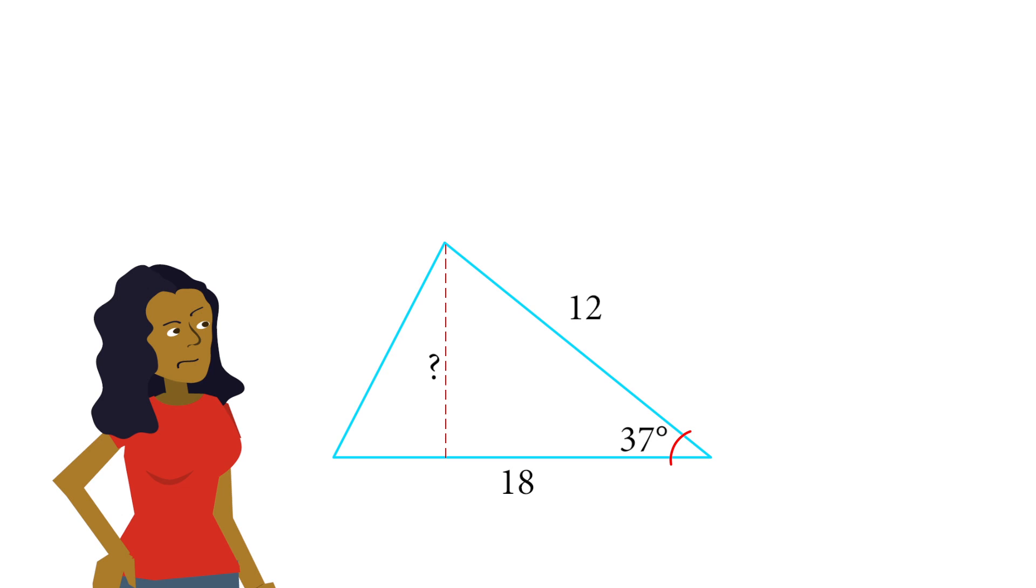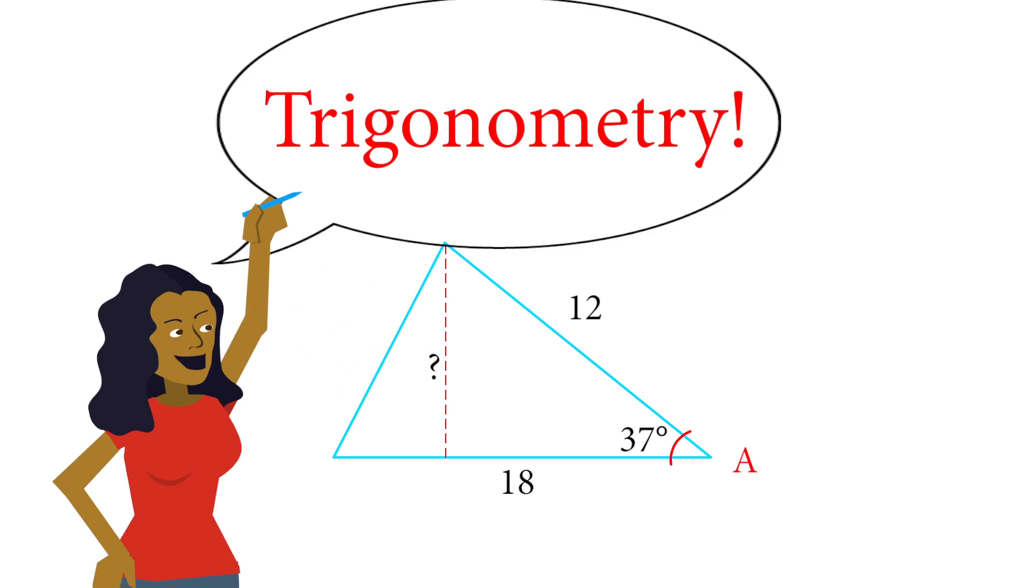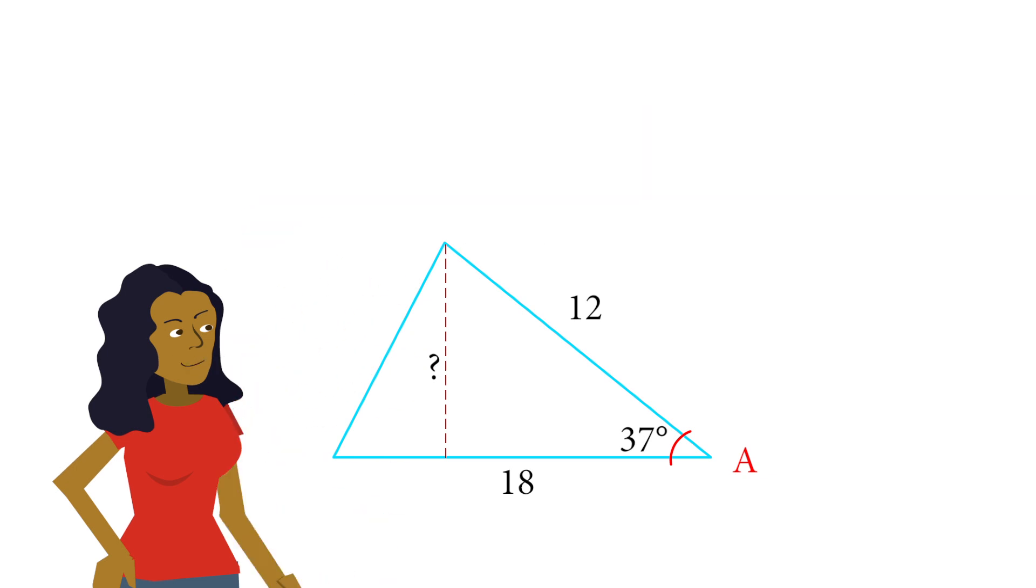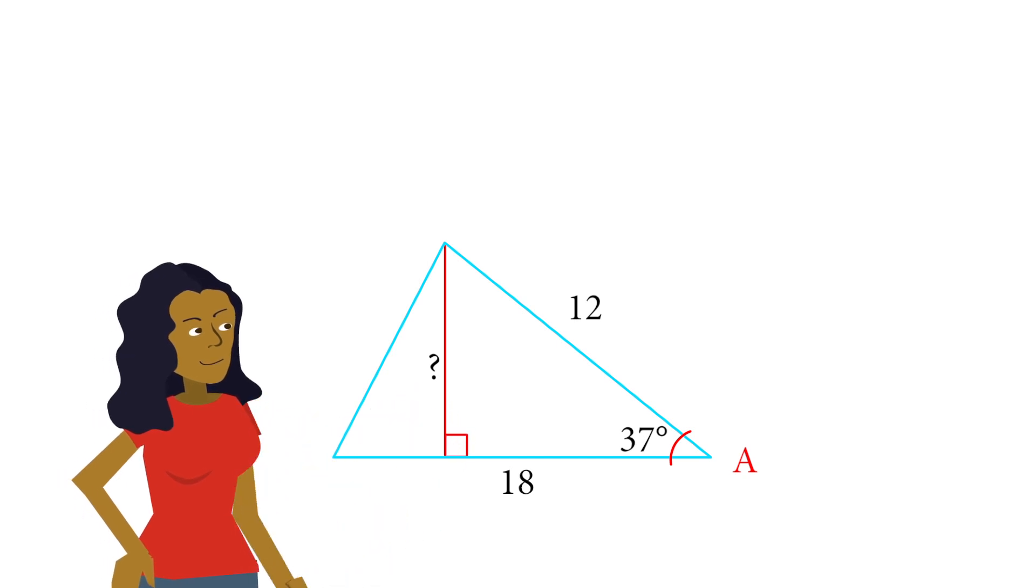We're going to call this vertex A. And so now, how do we calculate the area of this triangle? Well, it turns out we do know something about the height of this triangle because of trigonometry. What we're going to do is, if we do draw a line that represents the height of this triangle with base 18, then we have a right triangle inside our larger triangle.